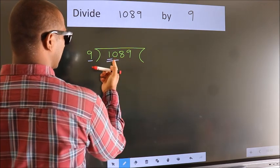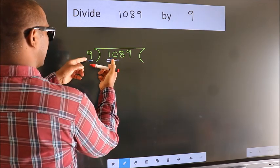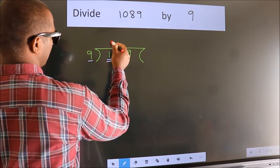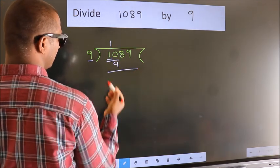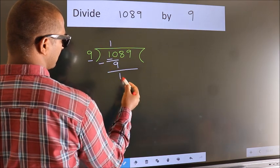10. A number close to 10 in the 9 table is 9 once 9. Now we should subtract. We get 1.